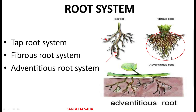Next coming to the adventitious root. Sometimes roots arise from parts of the plant other than the radicle. These types of roots are called adventitious roots. As you can see in the diagram, adventitious roots are used for various purposes like vegetative propagation, mechanical support, and many others.